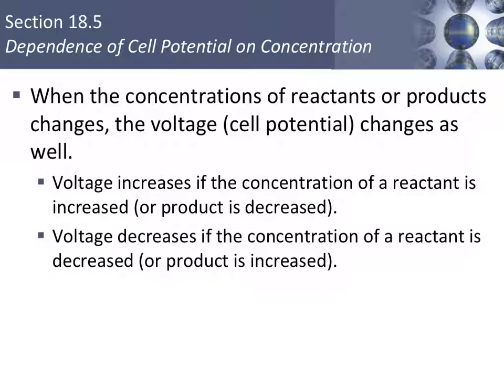Again, that cell potential is that driving force of the electrons. The voltage will increase if the concentration of a reactant is increased or if a product is decreased. We are basically talking about having more reactant than product, which increases the driving force of the electrons. The voltage will decrease if the concentration of a reactant is decreased or a product is increased. Basically, less reactant than product. The driving force of the electrons is decreased.